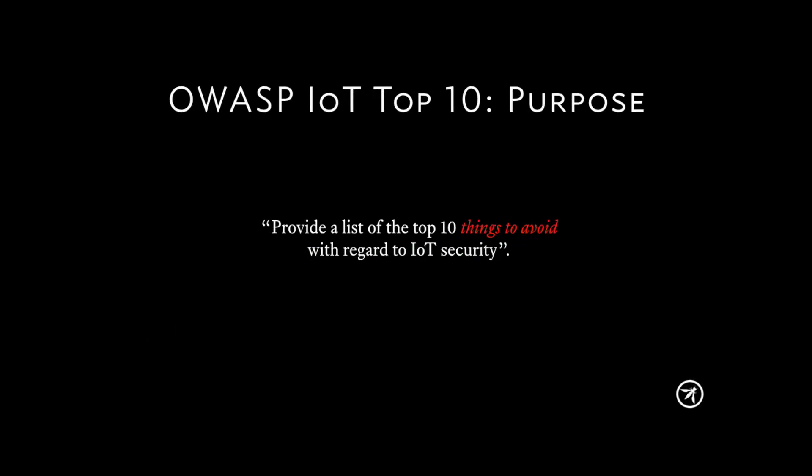The purpose for the IoT Top 10 is basically the 10 worst things that you should avoid. It's not specifically vulns or threats or risks, because you could talk for hours about the differences between those. The idea is just: these are bad things, don't do these things.